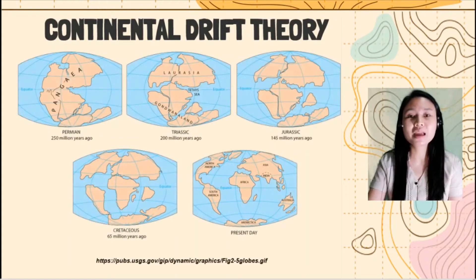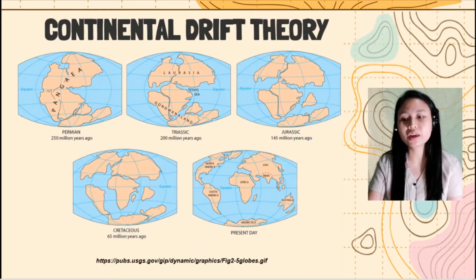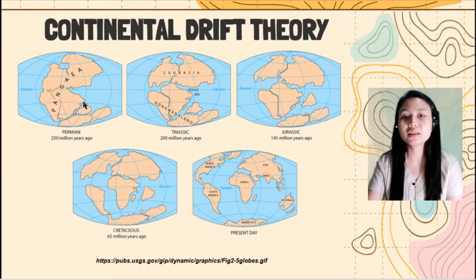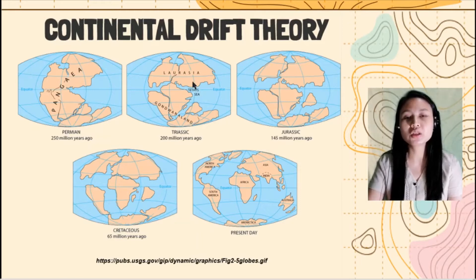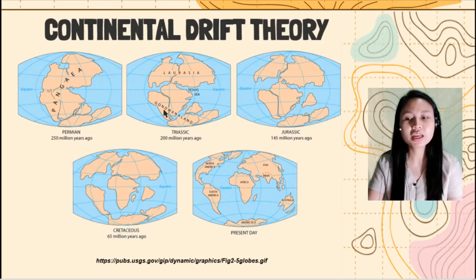Now we have the timeline of the drifting of Pangea. In the Permian period, there was the existence of Pangea — that was 250 million years ago. 200 million years ago, in the Triassic period, Pangea started to drift apart into two supercontinents: Laurasia and Gondwanaland.